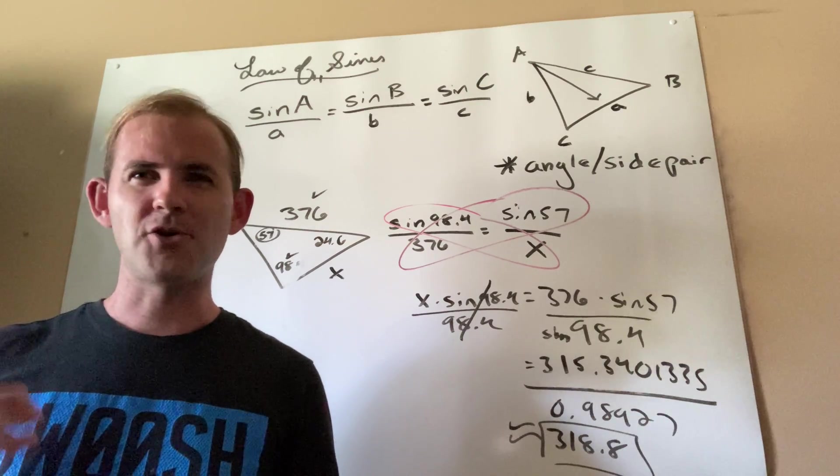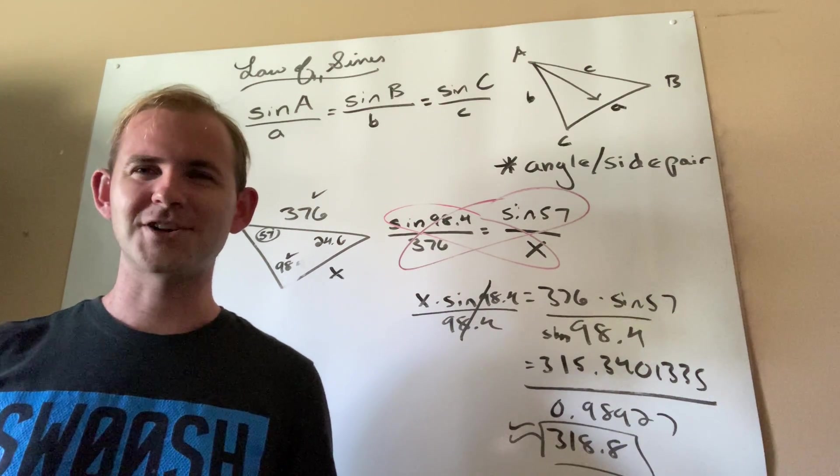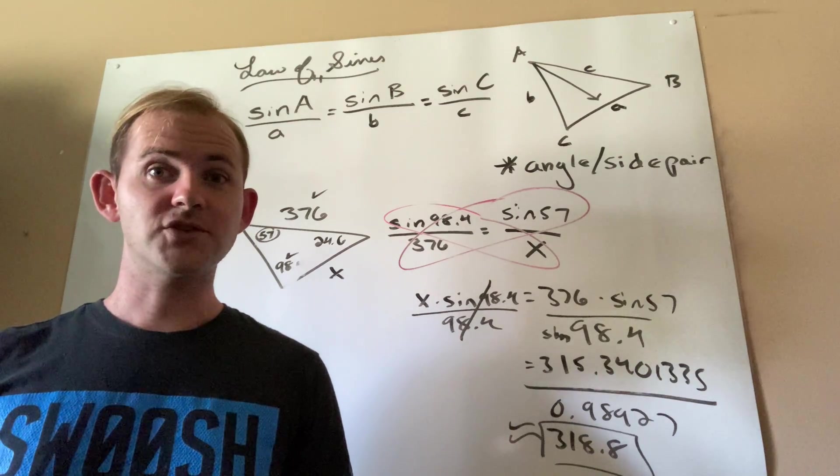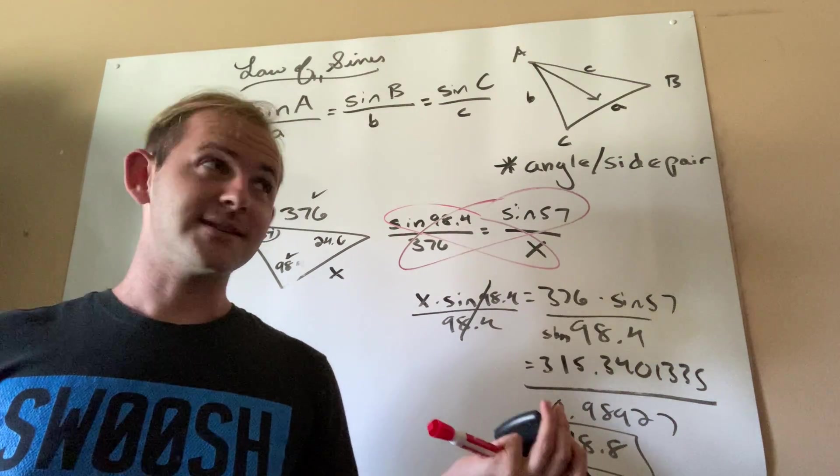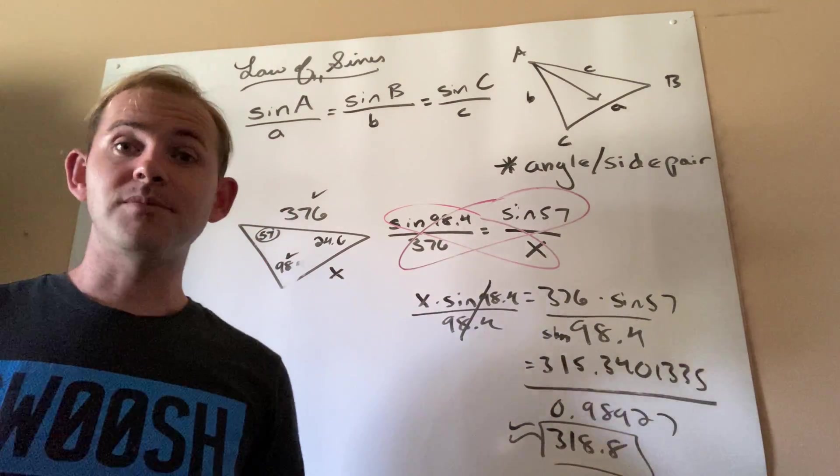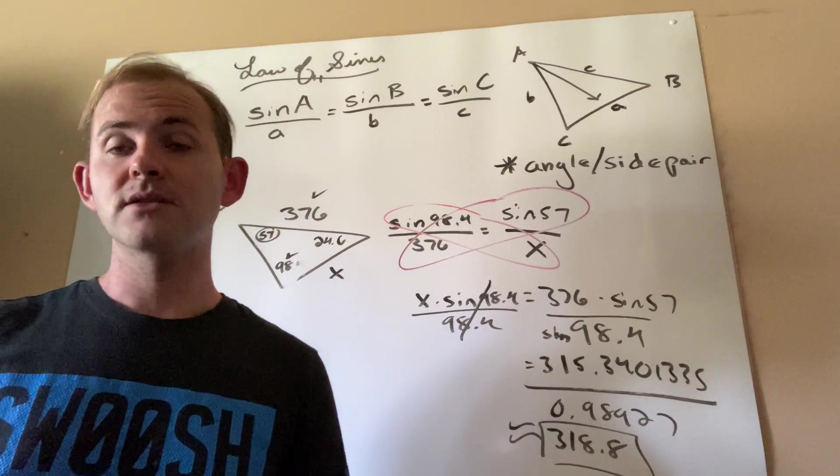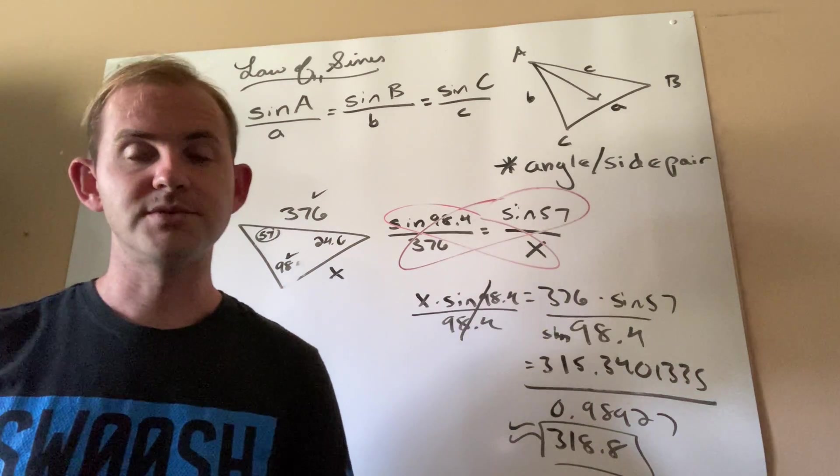So think of the law of sines as a way of compensating for the weaknesses of regular sine, cosine, and tangent. Normally, when I'm doing the whole opposite over hypotenuse, adjacent over hypotenuse, and all that, I can only do it with right triangles. Law of sines, as weird as it looks, it actually applies to any triangle, whether it be acute, right, or obtuse.